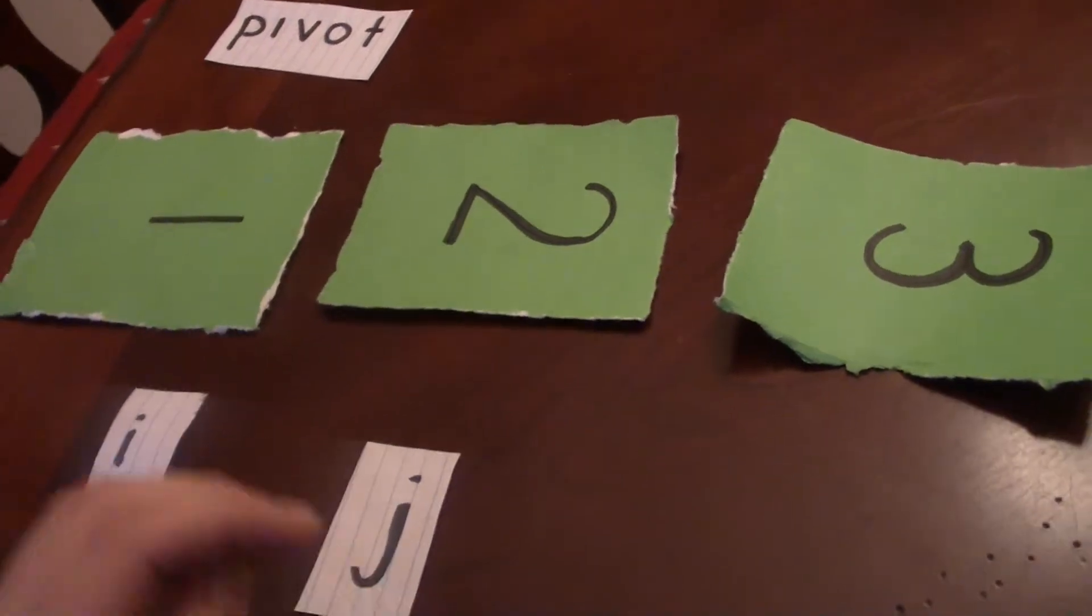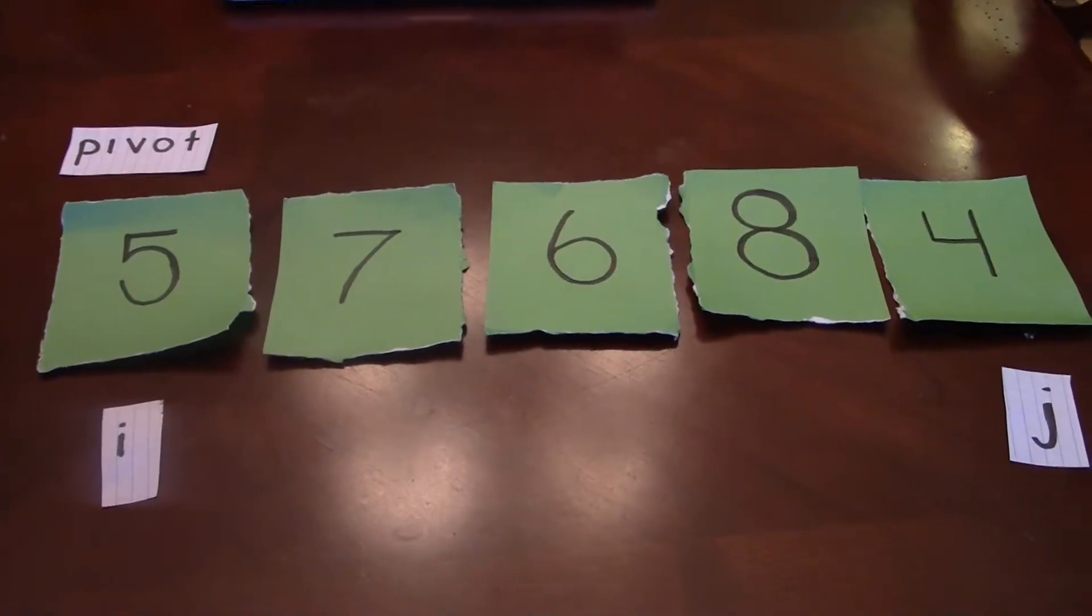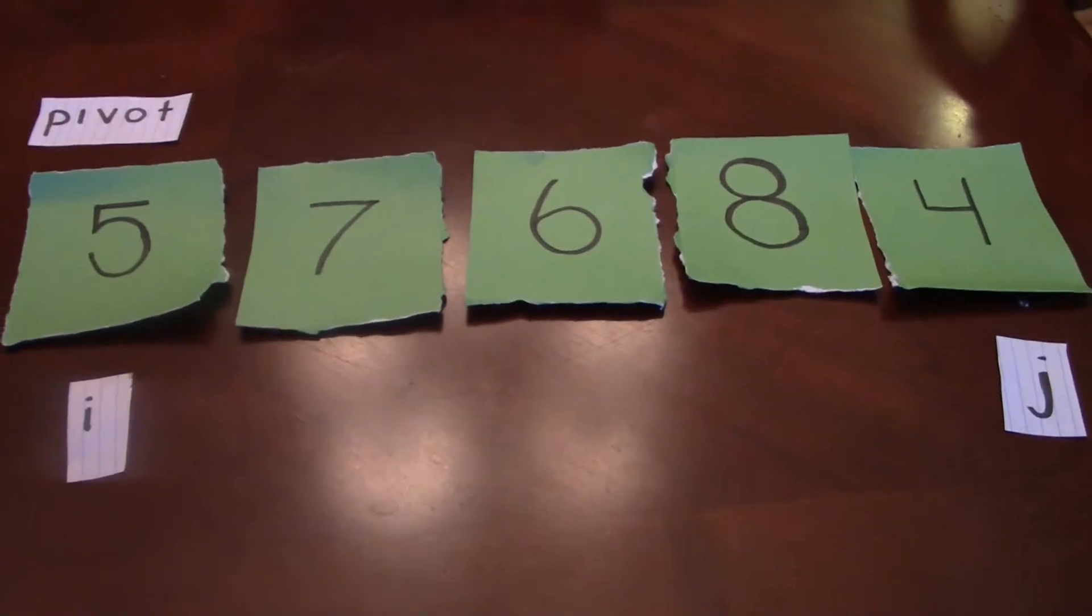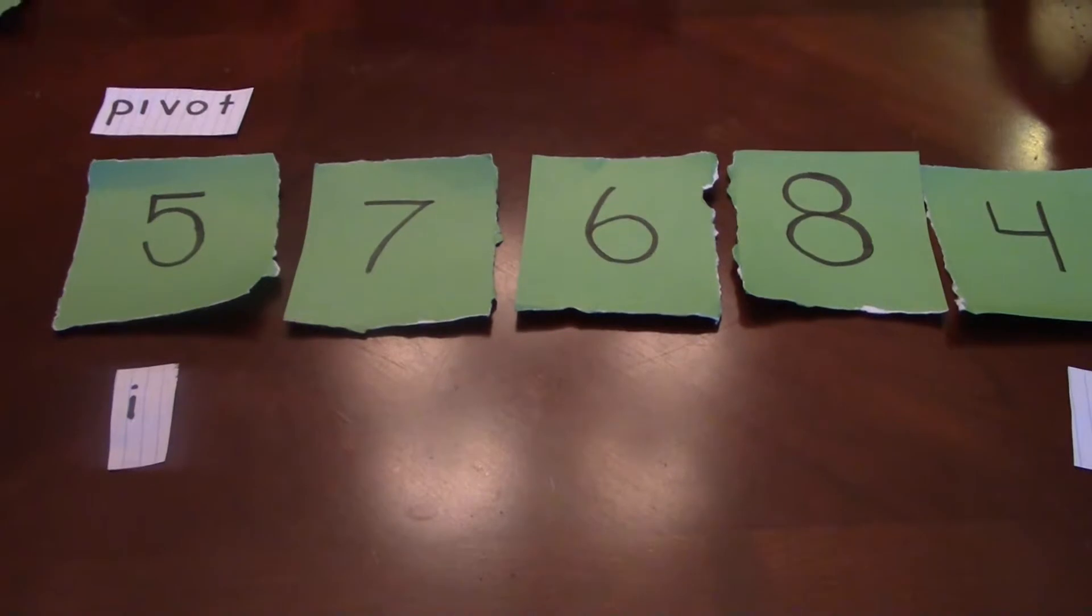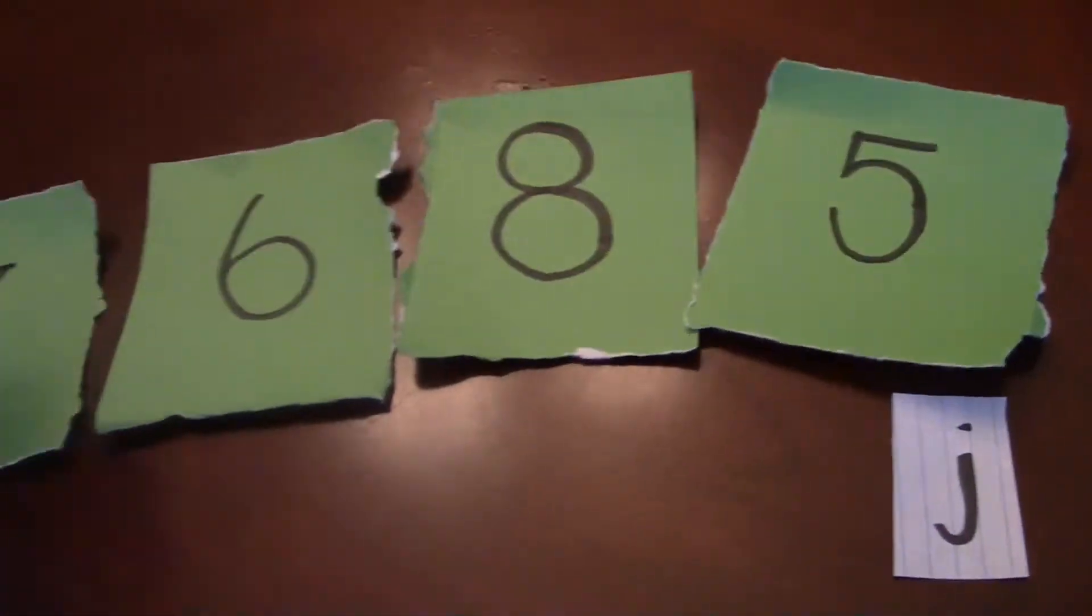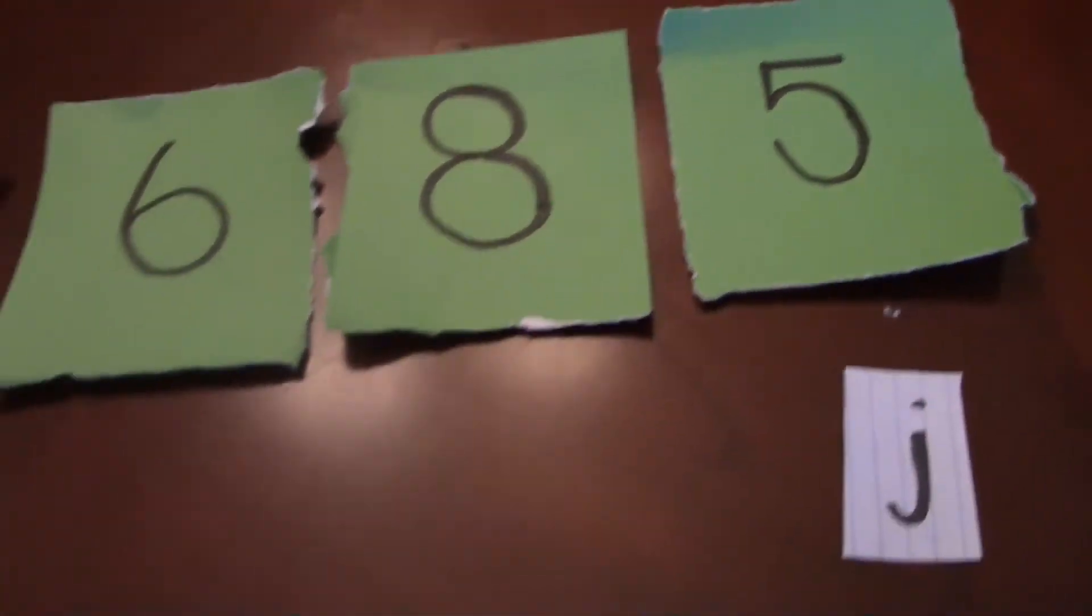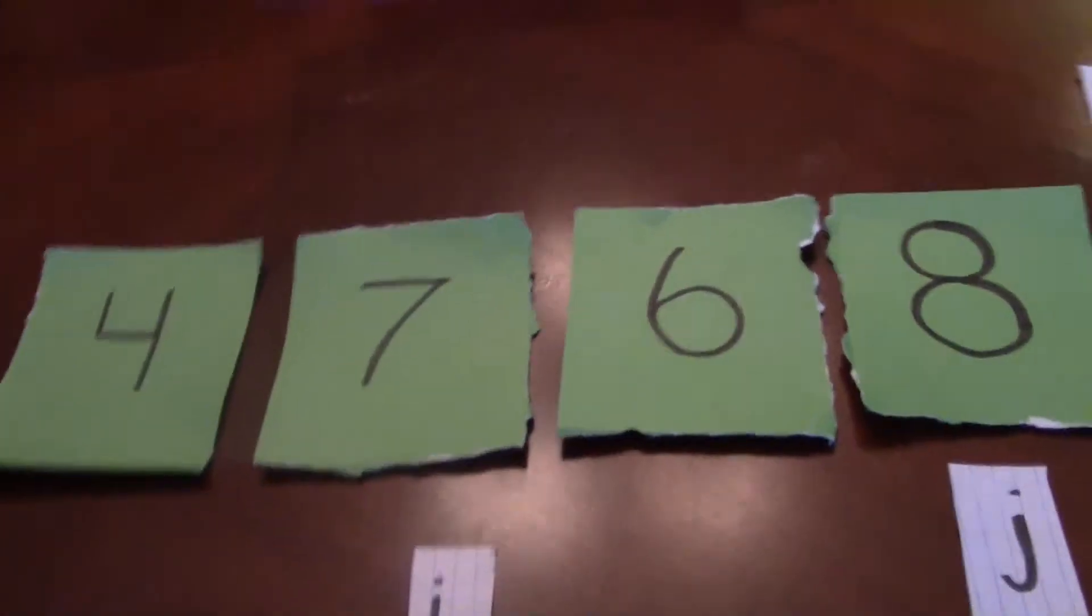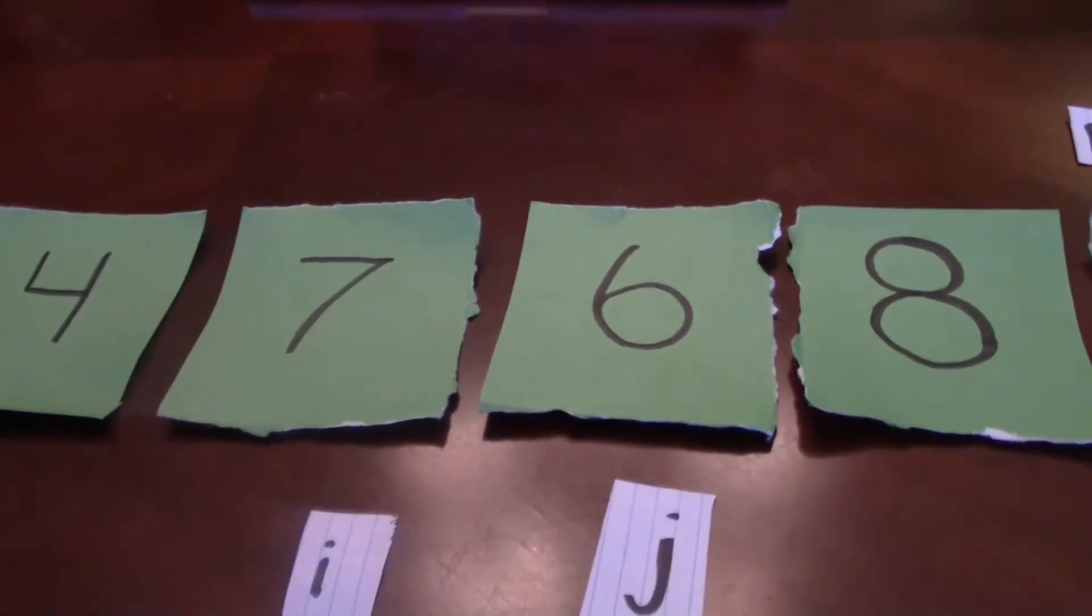Okay guys, so now we're going to sort the second group. So first we're going to compare the five and the four and we know that the five is greater than the four so we're going to swap that. Okay. And so next we're going to move our counters over and now we're going to compare the seven and the eight.